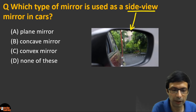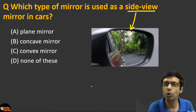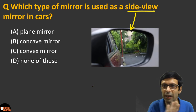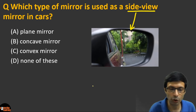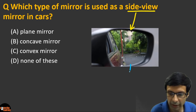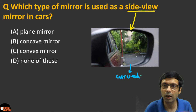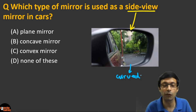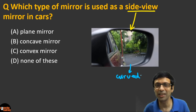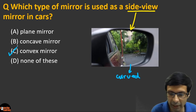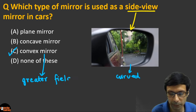This is a bit confusing because the side view mirror almost looks like a plane mirror — it has a very slight curve. But it is actually a curved mirror. The reason it's curved is that the driver wants a greater field of view in the side and rear view mirrors.